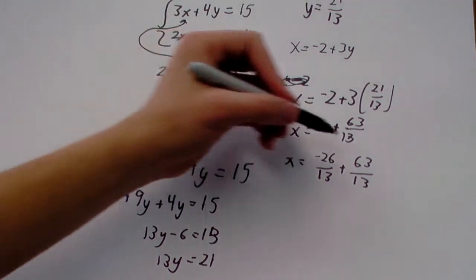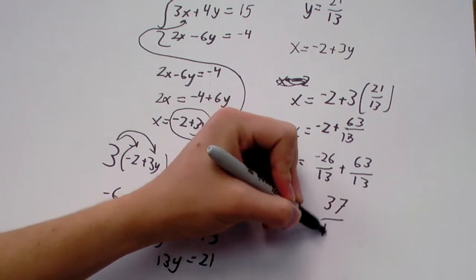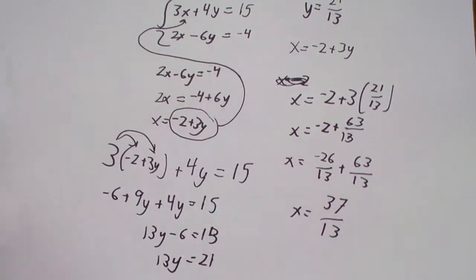So, x is 63 minus 26 over 13, or 37 over 13. So, that's our value for x.